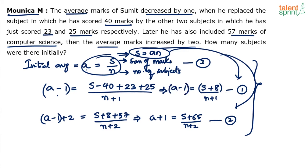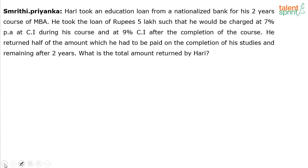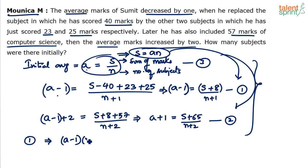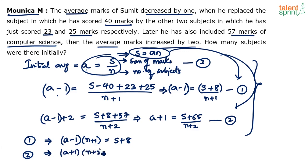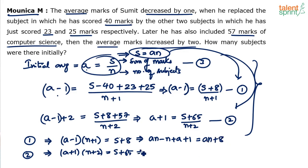From equation 1: expanding A minus 1 into N plus 1 gives AN minus N plus A minus 1 equals AN plus 8. From equation 2: A plus 1 into N plus 2 gives AN plus N plus 2A plus 2 equals AN plus 65. AN cancels on both sides in both equations.